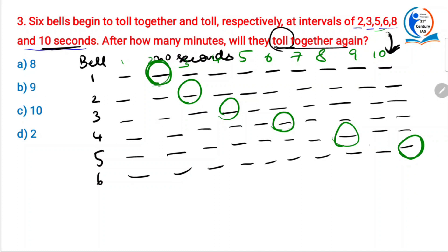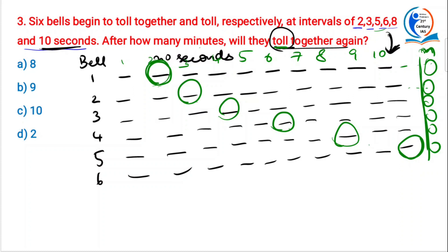They are ringing in this fashion. At some nth second, all these bells will ring together — what is that nth second? That is the question. Now, this n must be a multiple of 2 — that is when bell 1 rings. It will ring at 4, 6, 8, 10 seconds and the nth second. Bell 2 rings at 3, 6, 9 and nth second. Bell 3 at 5, 10 and nth second.